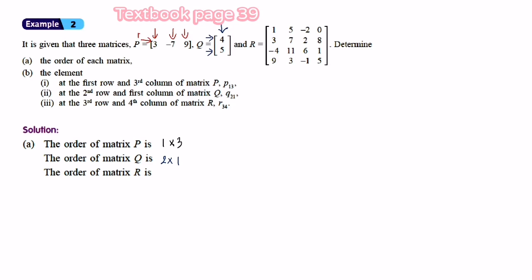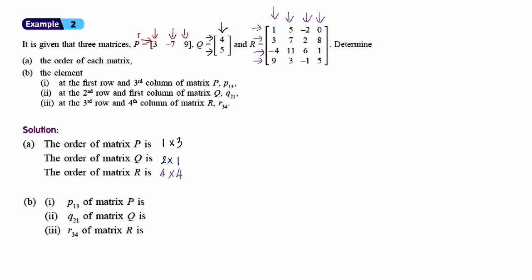For matrix R, counting the rows: 1, 2, 3, 4, and the columns: 1, 2, 3, 4. So the order of matrix R is 4 by 4. Next, the element at the first row and third column of matrix P is P_13. First row, third column — that element is 9, so P_13 equals 9. For Q_21, second row and first column — the element is 5. For R_34, third row and fourth column — the element is 1.